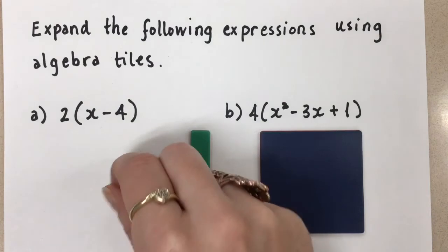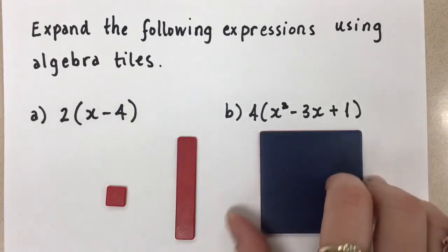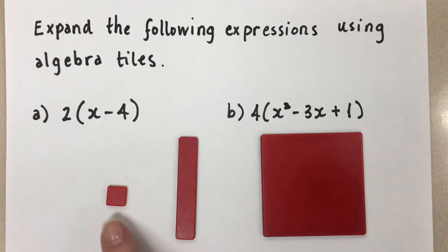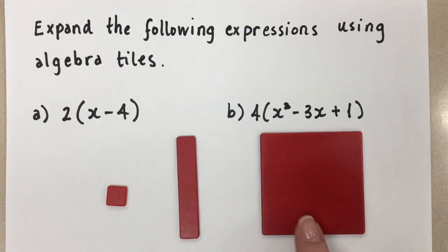When we turn the algebra tiles over, they're red, and the red side denotes the negative value. So this is negative 1, negative x, negative x squared.